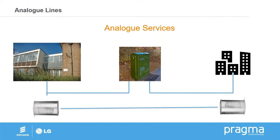The first type of line I want to touch on is analog lines. An analog line is a very, very basic type of communication — I compare it to a tin can and a bit of string. The analog service starts at the telephone exchange. It's usually an old building that looks a bit like a school or a fire station because of when it was built, but essentially what is in there is all the information. This is where everything connects back to, and you'd usually find a telephone exchange in a large town or a city.